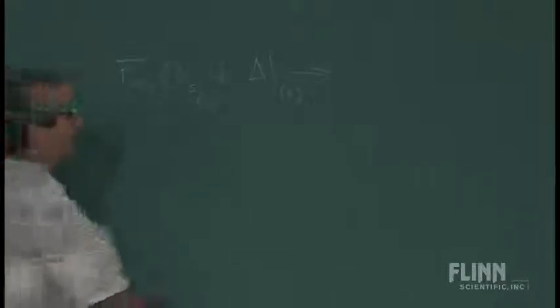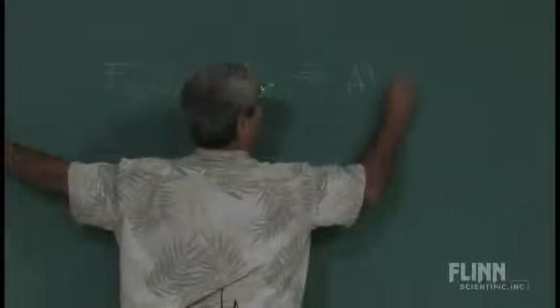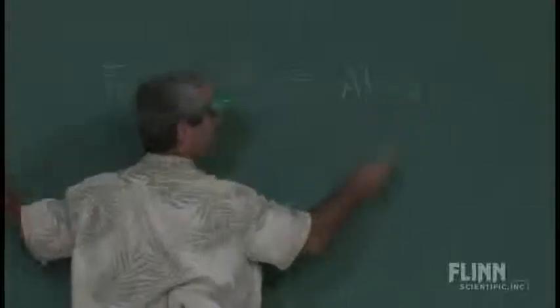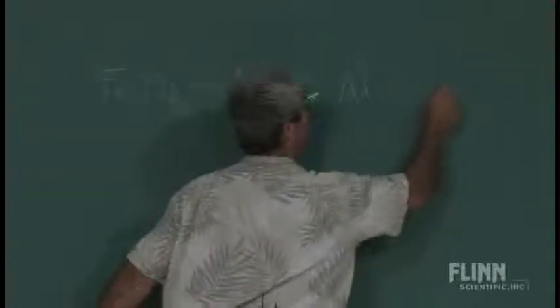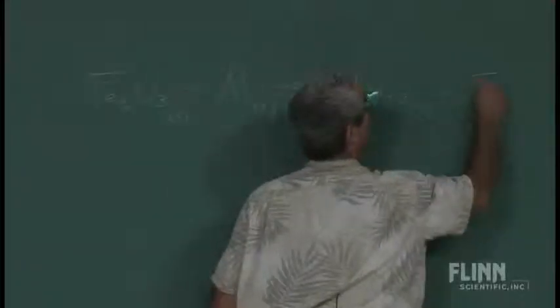usually in powdered form to increase the surface area, it's a very vigorous reaction, and all it involves is aluminum saying, hey, I want the oxygen. We get aluminum oxide and iron.